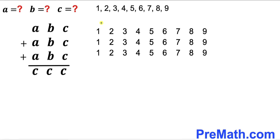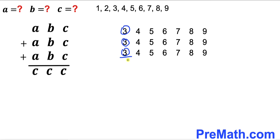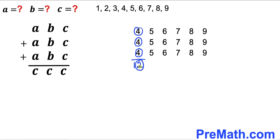Let's test each value of C. If C=1: 1+1+1=3, and 3≠1, so we rule out 1. If C=2: 2+2+2=6, and 6≠2, ruled out. If C=3: 3+3+3=9, and 9≠3, ruled out. If C=4: 4+4+4=12, ones digit is 2, and 2≠4, ruled out.